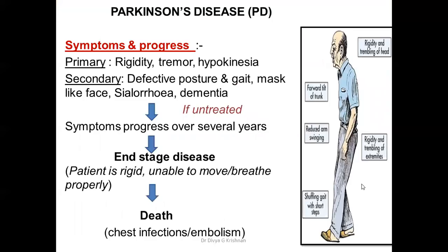The symptoms of Parkinson's disease include primary symptoms like rigidity, tremor, and hypokinesia. Secondary symptoms include defective posture and gait, a mask-like facies, sialorrhea, and dementia. If the patient is untreated, the symptoms can progress over several years and end up in end-stage disease characterized by very severe rigidity, and the patient being unable to move.